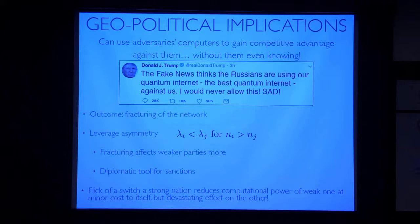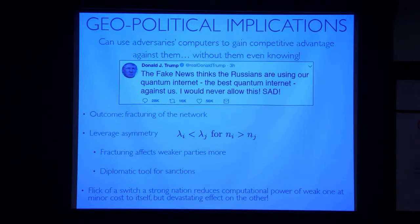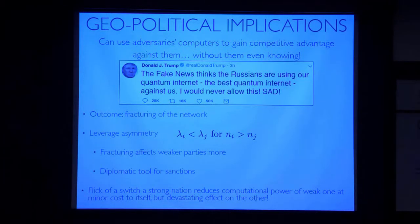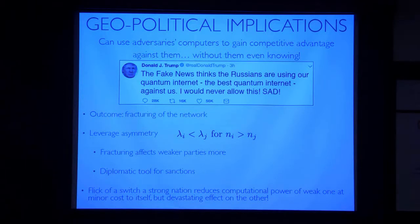If we have this globalized network, it's foreseeable that powerful players might say to a weaker party: do this for us or we'll exclude you from the network. If they were to exclude Tanzania, it wouldn't do much to the United States because they own most of the qubits, but it would absolutely decimate the computational power of Tanzania. So there are all sorts of power asymmetries that would arise from this kind of globalized, time-shared model.